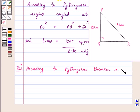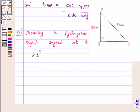Now according to the Pythagoras theorem in triangle PQR, we have PR square is equal to PQ square plus QR square.